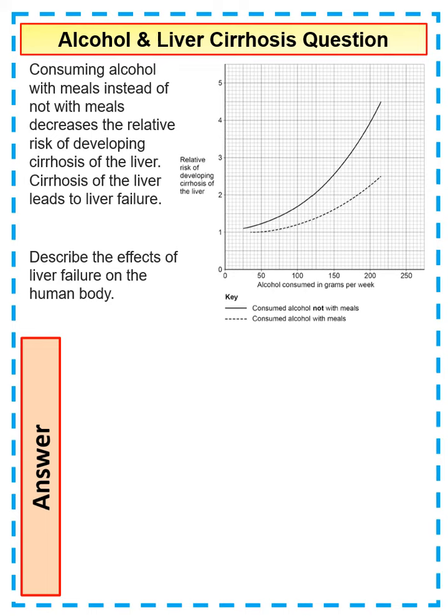In this question we're going to look at the effect of alcohol and liver cirrhosis. The question says consuming alcohol with meals instead of not with meals decreases the relative risk of developing liver cirrhosis, which leads to liver failure. So describe the effects of liver failure on the body.